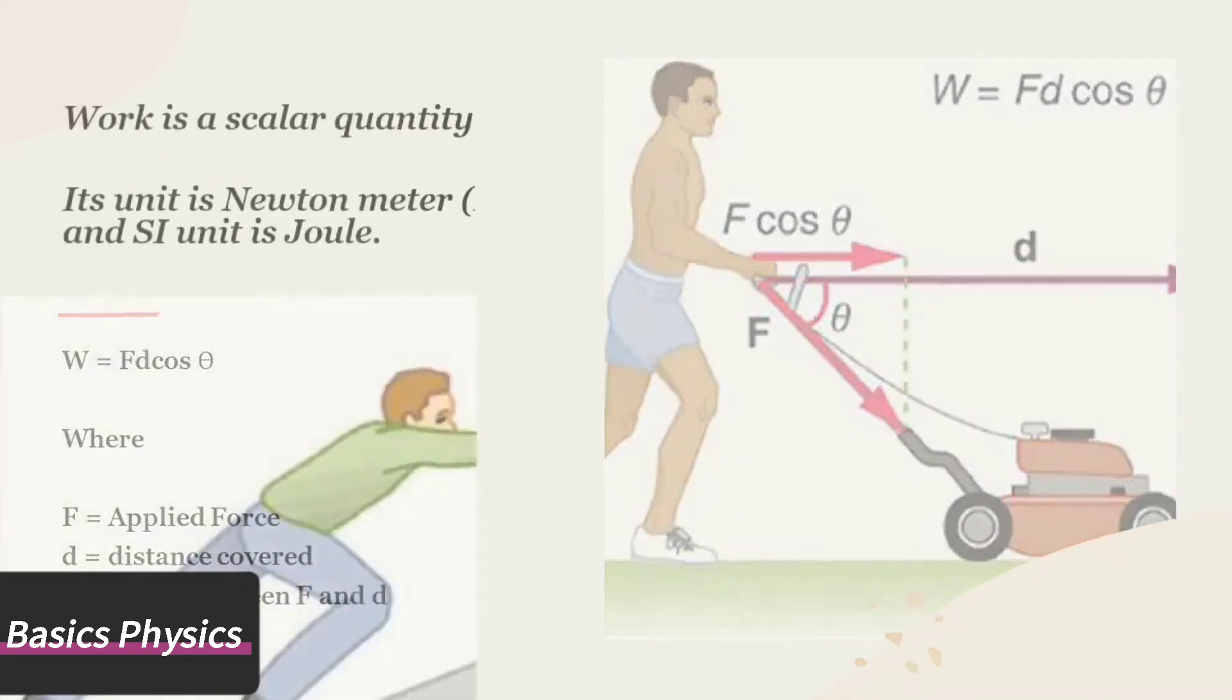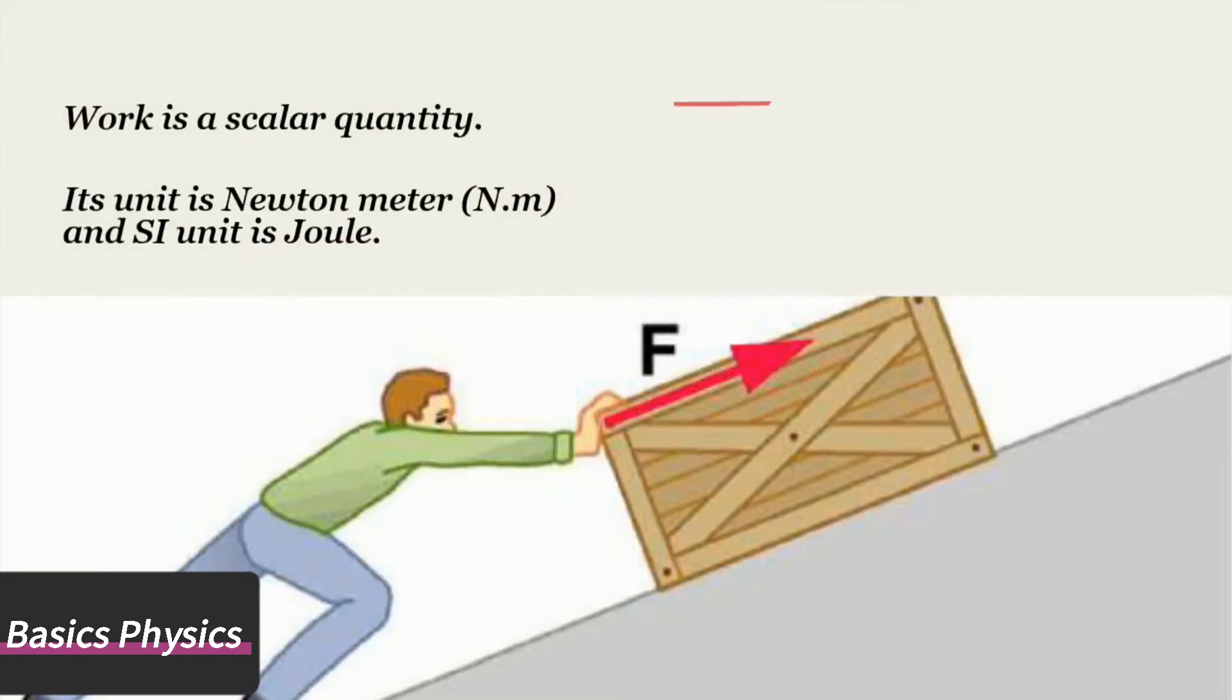Work done is a scalar quantity. Its unit is newton meter. Its SI unit is joule. Work is said to be one joule when one newton force acts on a body to displace an object one meter in the direction of force.